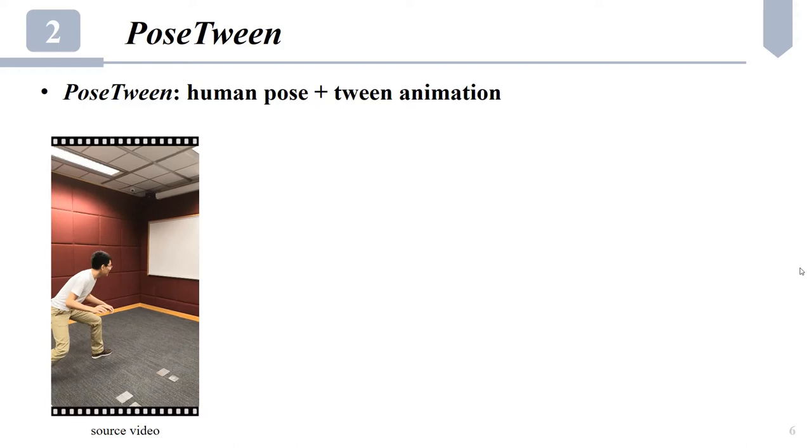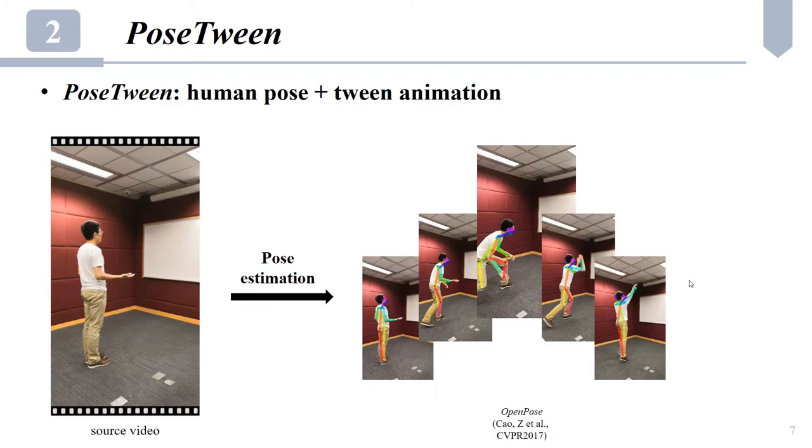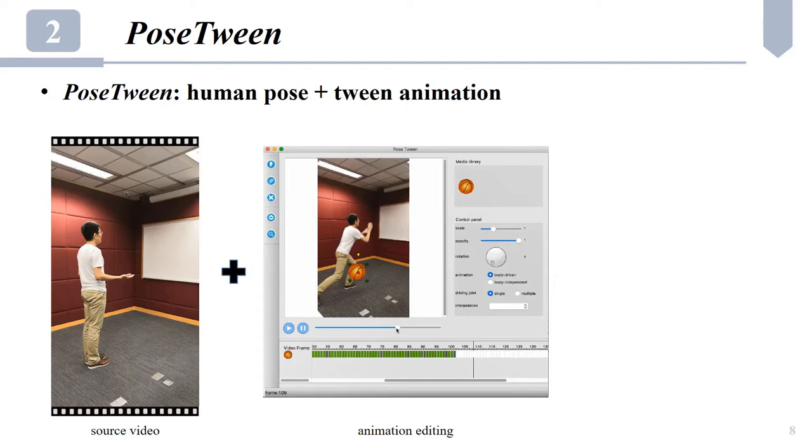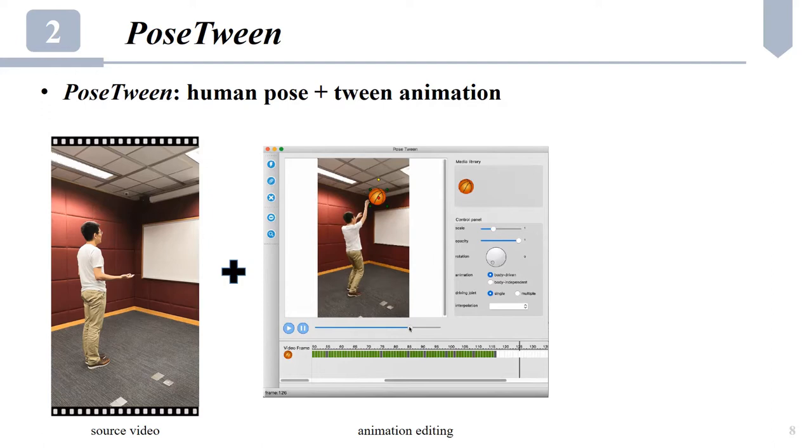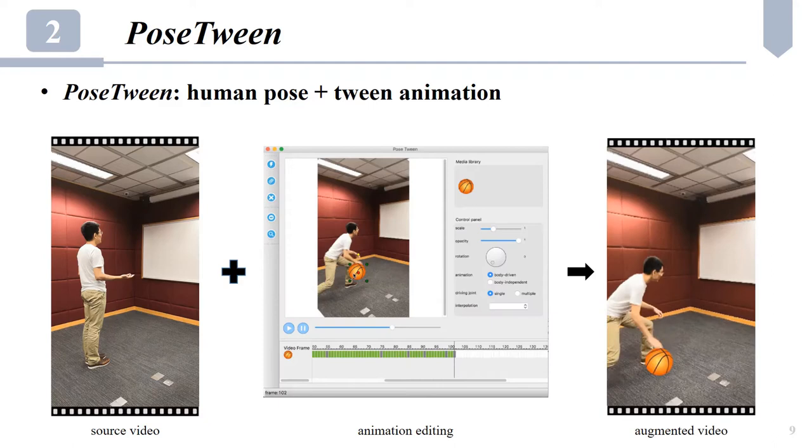We first demonstrate how PoseTween works with this dribbling basketball example. The input to our system is the source human action video. The pose of the subject at each frame can be obtained by existing 2D pose estimation methods, like OpenPose in our implementation. Given the source video, a user edits the virtual elements at keyframes with respect to the human action to create an animation of the virtual basketball.